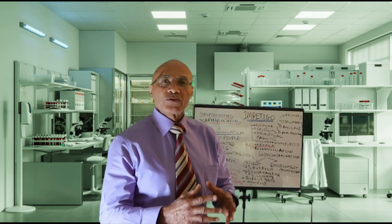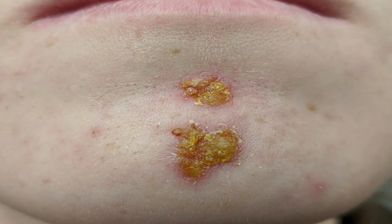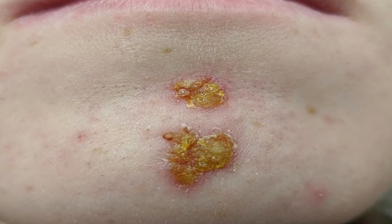Non-bullous impetigo usually presents with a fluid-filled vesicle that bursts, leaving a raw base. The secretions from which can then crust over and form a yellow, popularly called honey-colored crust on the lesion.